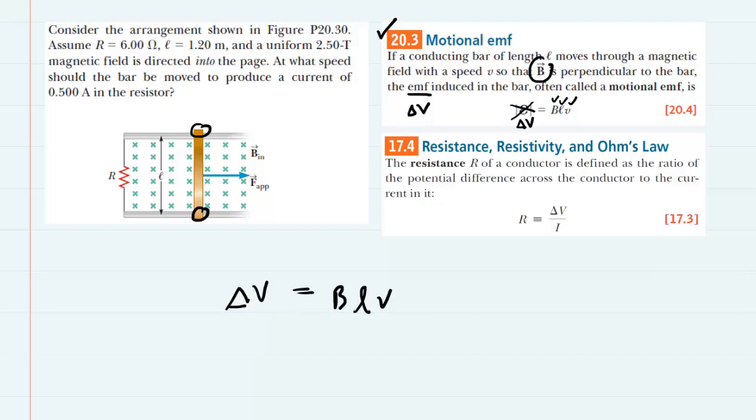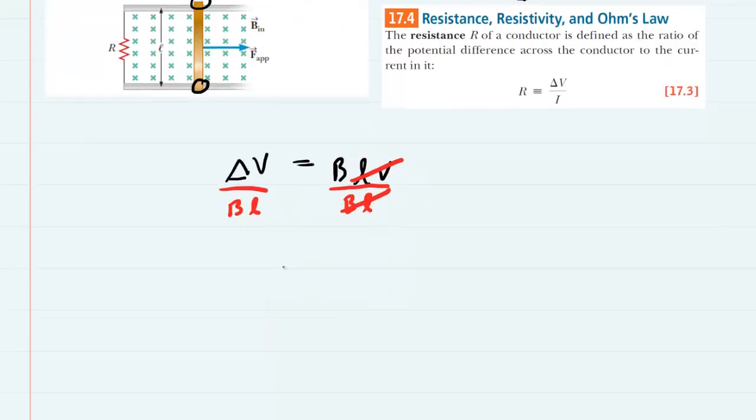And then, since the question is asking for speed, we could divide both sides of this equation by the quantity BL, so that it cancels out on the right-hand side. And if we come down the page, we can see that potential difference divided by magnetic field strength times the length is equal to the speed.